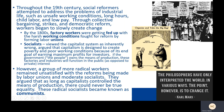By the 1800s, factory workers, fed up with the harsh working conditions they had to deal with, fought for reform by forming labor unions. Socialists, meanwhile, viewed the capitalist system itself as being inherently wrong and argued that it was designed to create poverty and poor working conditions precisely because of its end goal of earning maximum profits for investors. If the government representing the people as a whole owned the means of production instead, these factories and industries would function in the public good as opposed to private interests, or so they argued.